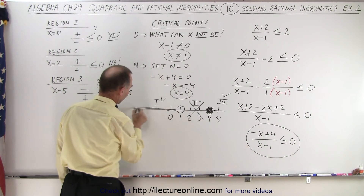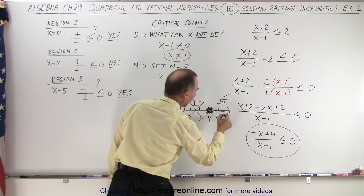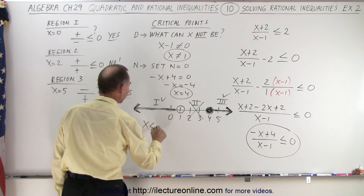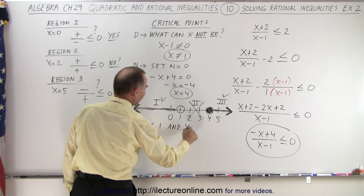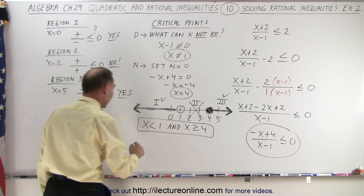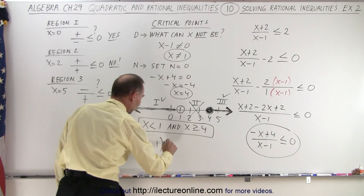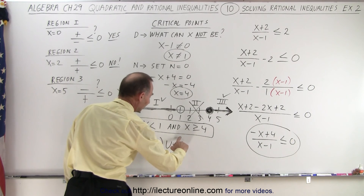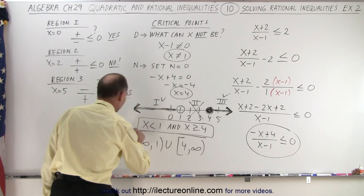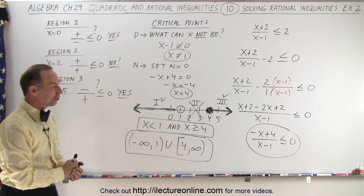So let's darken the regions that are satisfied: region one and region three. In mathematical form, the solution is x less than one or x greater than or equal to four. In interval notation, that is negative infinity to one, not including one, union four to positive infinity, including four. And that is how we solve this rational inequality.